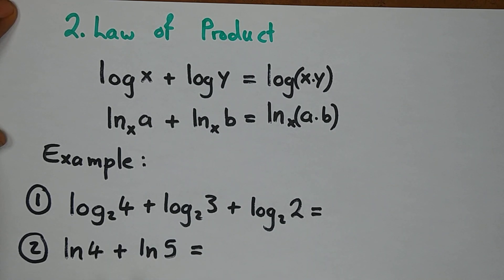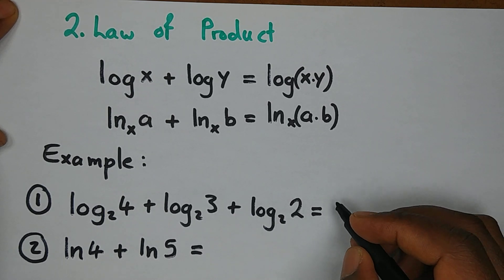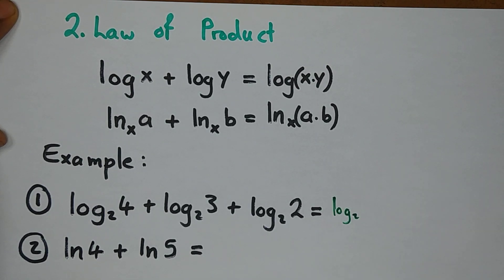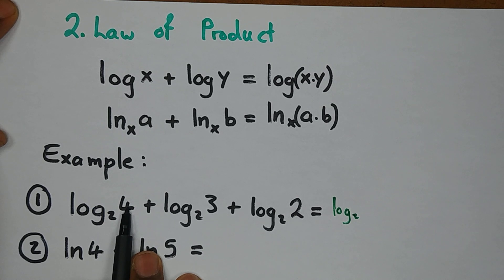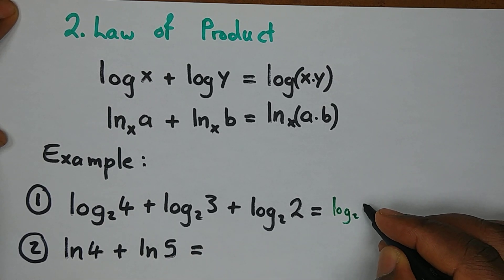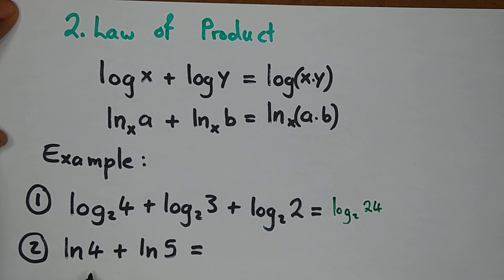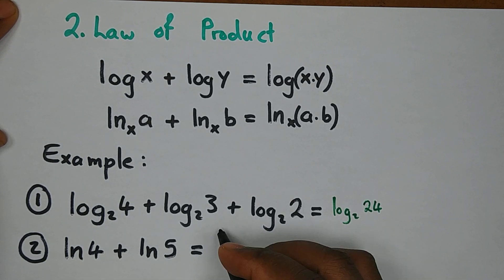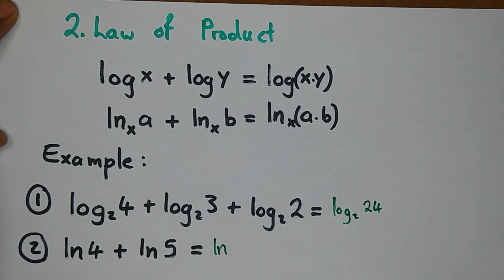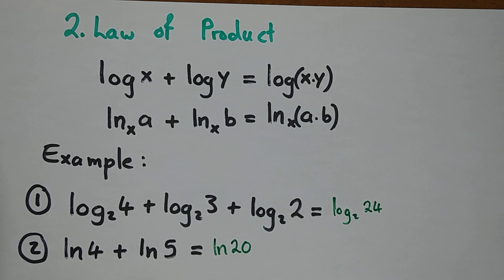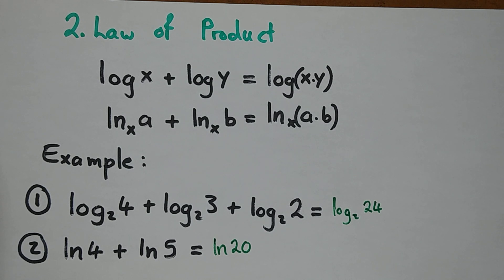Taking a quick example: are the bases the same? Yes. So we get a log in base 2, then multiply the arguments since everything is adding: 4 × 3 × 2 = 24. So we get log 24 in base 2. Similarly for natural logs: ln 4 + ln 5 gives ln 20, since 4 × 5 = 20. This means calculating ln 4 + ln 5 gives the same value as simply pressing ln 20.